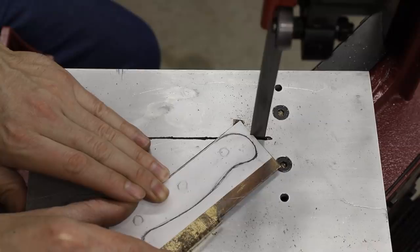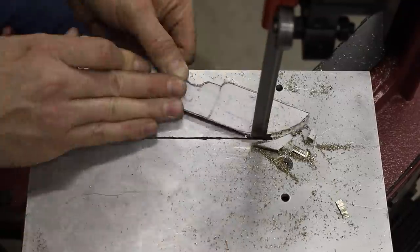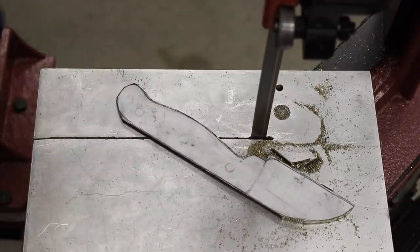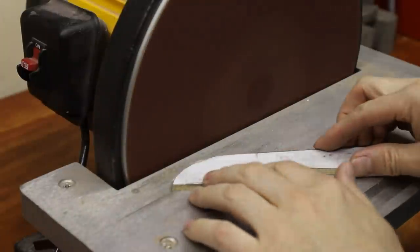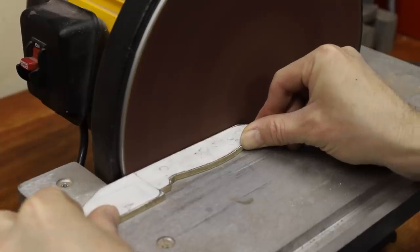Next I went to work cutting out the shape of the knife. Fortunately I have a metal cutting band saw which made quick work of cutting through the metal.